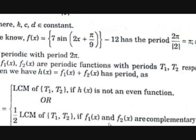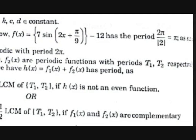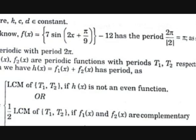If f₁(x) and f₂(x) are complementary pairwise comparable functions, then the period of the resultant function is half the LCM of T₁ and T₂, where T₁ and T₂ are the periods of f₁(x) and f₂(x).